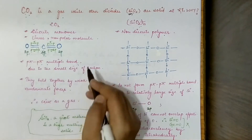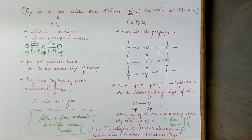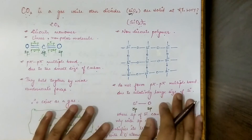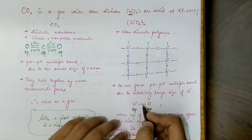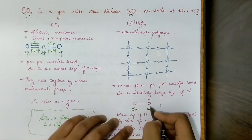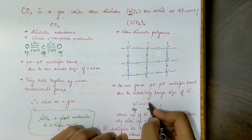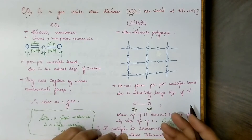But if you move down group 14 from carbon to silicon, the size of the atom will increase. If you look at the orbitals participating in bonding in the case of silicon and oxygen, you will find that the 2p orbital of oxygen participates and the 3p orbital of silicon participates.